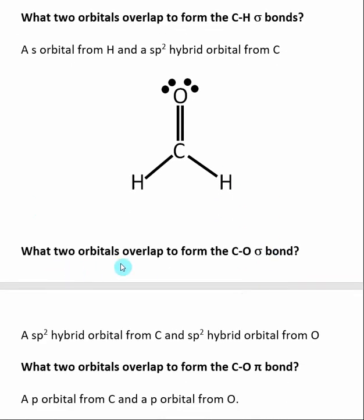This carbon is sp2 hybridized, so it uses sp2 hybridized orbitals to make its sigma bonds. So this C-H sigma bond is made by the overlap of an s orbital from hydrogen and an sp2 hybridized orbital from the carbon. Next, we'll find what two orbitals overlap to form the C-O sigma bond. Remember, the double bond is made up of a sigma bond and a pi bond, and each of these bonds use different orbitals. Sigma bonds are typically made by the overlap of hybrid orbitals, so the question is what's the hybridization on the carbon and oxygen. They are both sp2 hybridized, so the C-O sigma bond is formed by an sp2 hybridized orbital from carbon and an sp2 hybridized orbital from oxygen.